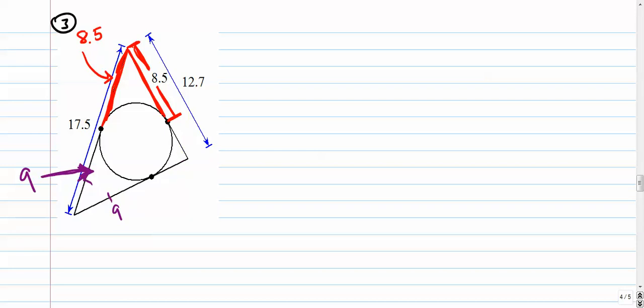That leaves me with this segment right in here and this segment right in here to figure out. We'll use the same strategy. The whole thing is 12.7, from here to here is 12.7. Take away 8.5, so 12.7 minus 8.5, that's 4.2. This is 4.2. If that's 4.2, this is 4.2. These two are congruent to each other.